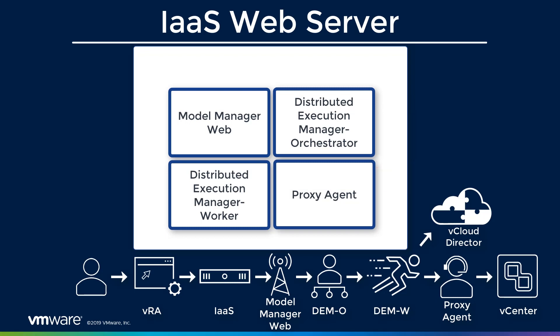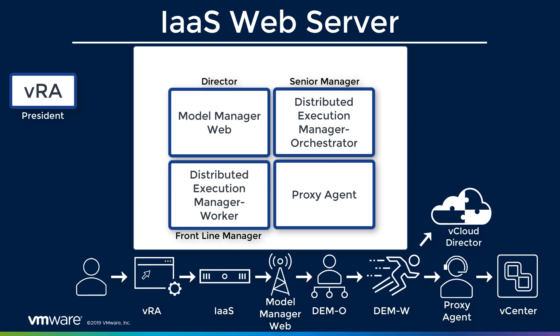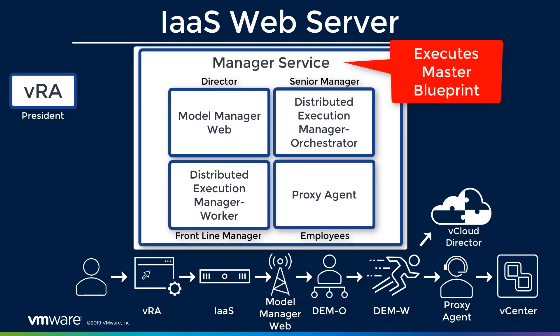If we take a step back and look at it as a company: VRA would be our president, our Model Manager Web would be our director handling communications, our DEM orchestrator would be a senior manager handing jobs off to a frontline manager or worker. And our frontline manager may or may not know how to execute a task — in that situation, it may have to hand it off to one of our employees, our proxy agent. Handling all this communication and keeping track of where everything is, is our manager service — like a project manager making sure it knows where everything is in its execution.